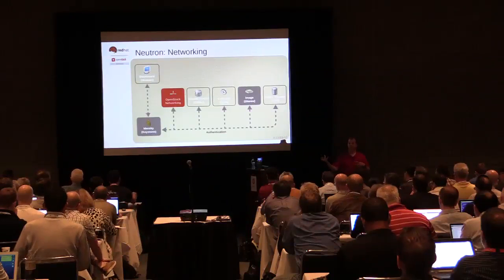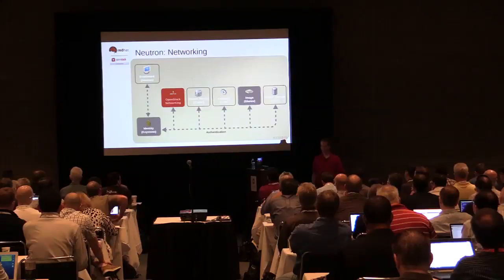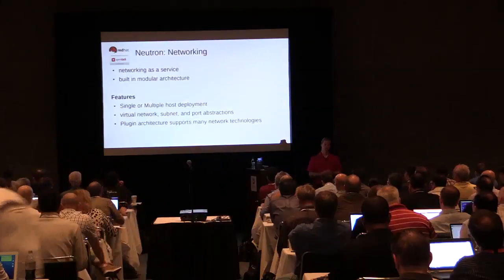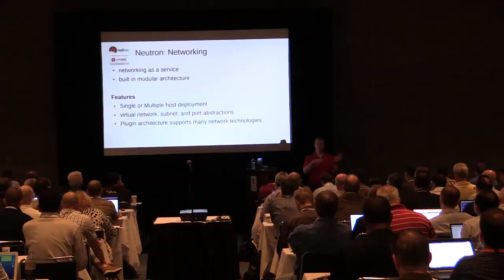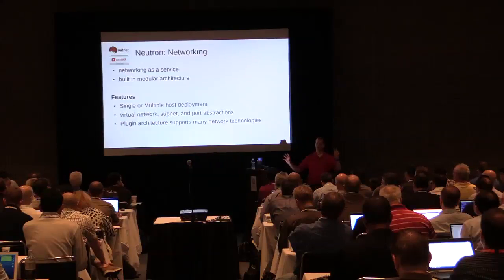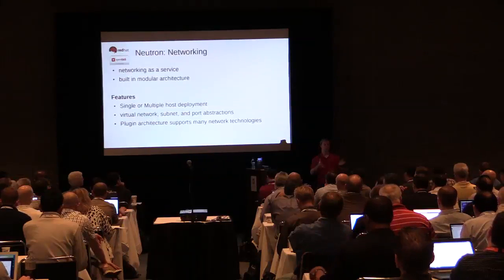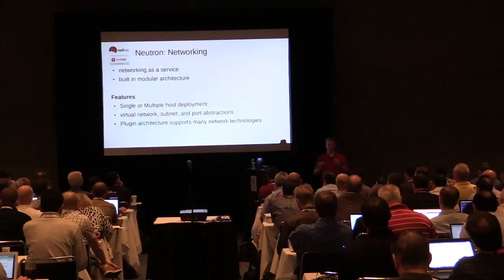Next we'll look at Neutron. Before launching an instance, we need the Glance image to boot from and a network for the instance to exist on. Neutron is our networking service — networking as a service, virtual network appliances and networks, intended to be isolated. In the old flat network style, all instances could talk to each other. With Neutron's virtual isolated networks, tenant A can't talk to tenant B unless explicitly provisioned.